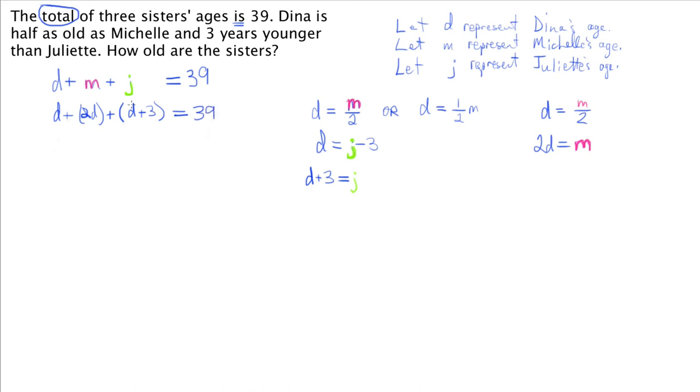We will collect our like terms, distribute if we have to. What we end up with is 4D plus 3 is 39. I can subtract 3 on both sides. And I can divide both sides by 4. And this tells me that Dina is 9 years old.